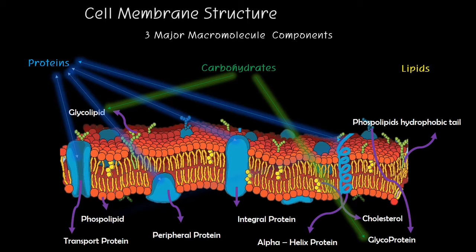Lipids primarily consist of cholesterol and phospholipids. They are intended to maintain the integrity of the phospholipid bilayer and keep it apart or close together, especially during hot or cold weather. Lipids may include cholesterol or a phospholipid hydrophobic tail.